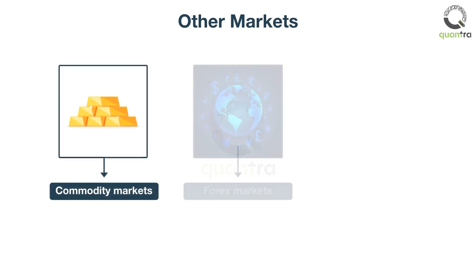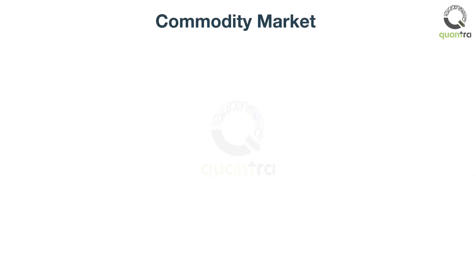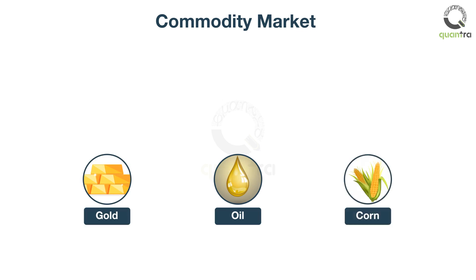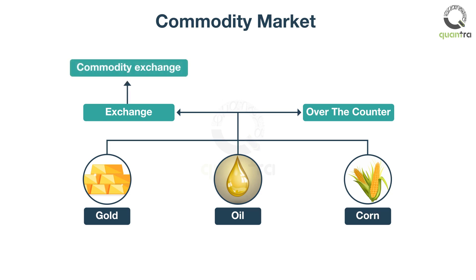Apart from the bond market and equity market, other types of market are the commodity market, forex market, and derivatives market. A commodity market is a market where commodities such as gold, oil, corn, and others are traded. Commodities can be traded over the counter, that is, between two parties directly, or on the exchange. Exchanges where commodities are traded are also known as commodity exchanges.